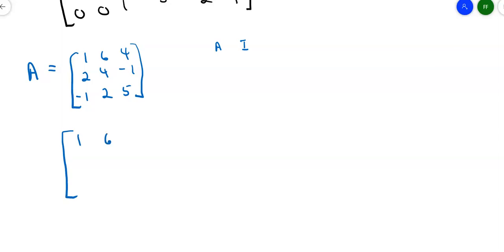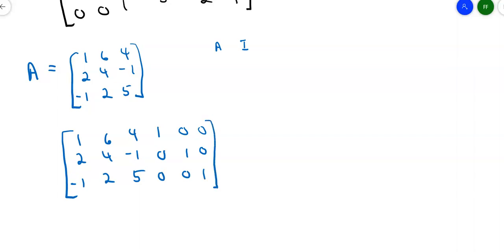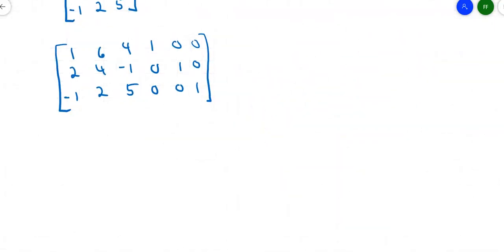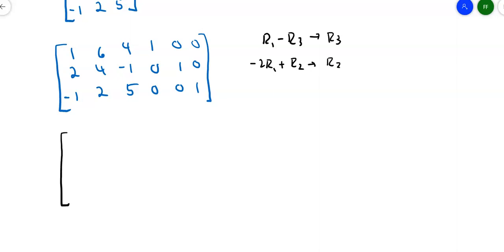So the original matrix is 1, 6, 4, 2, 4, negative 1, negative 1, 2, 5. And the identity matrix is 1, 0, 0, 0, 1, 0, 0, 0, 1.